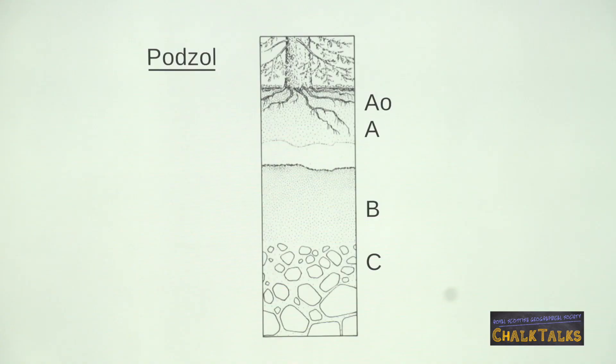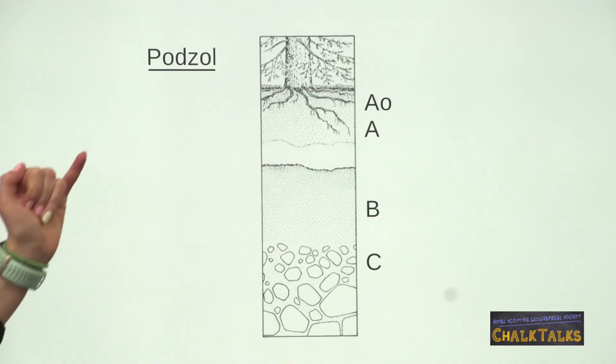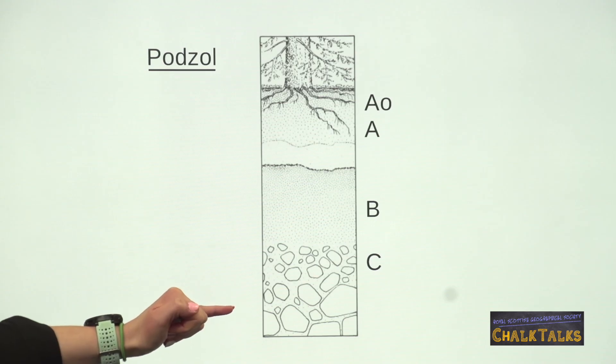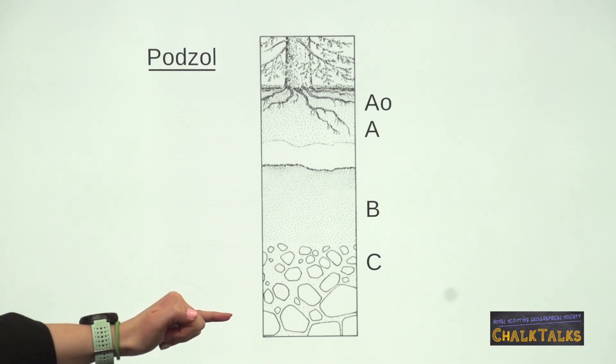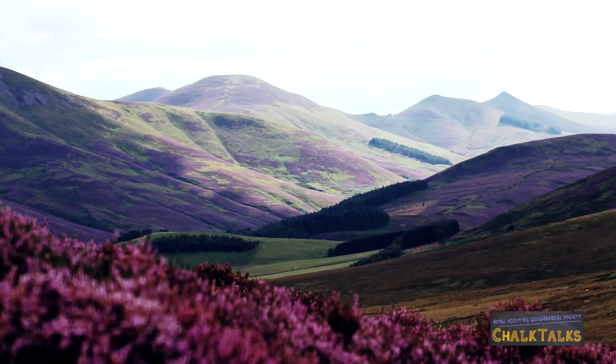Beneath the iron pan we have the parent material, which is glacially derived and can be broken up by physical weathering such as freeze-thaw weathering.